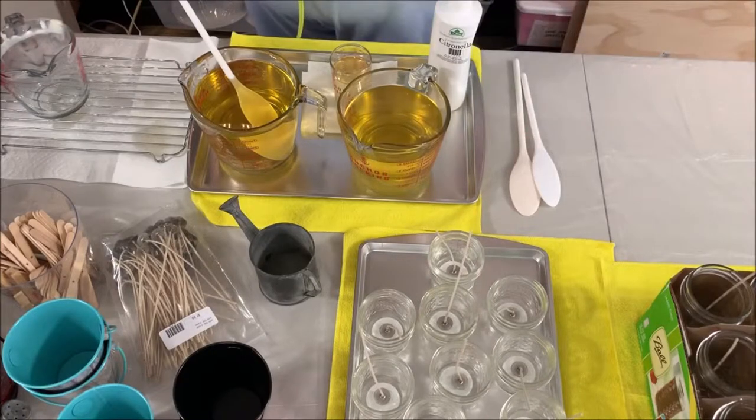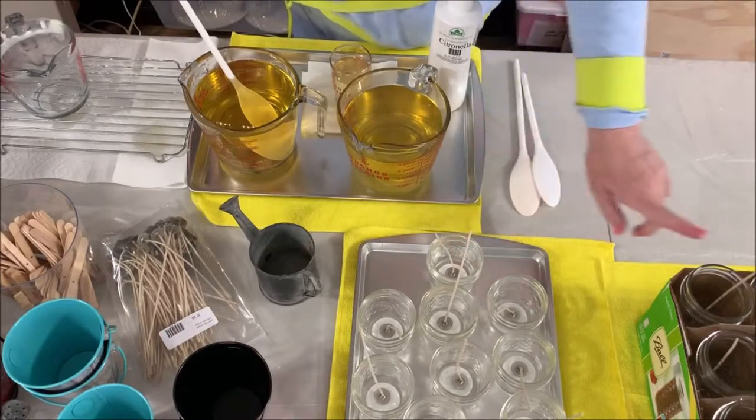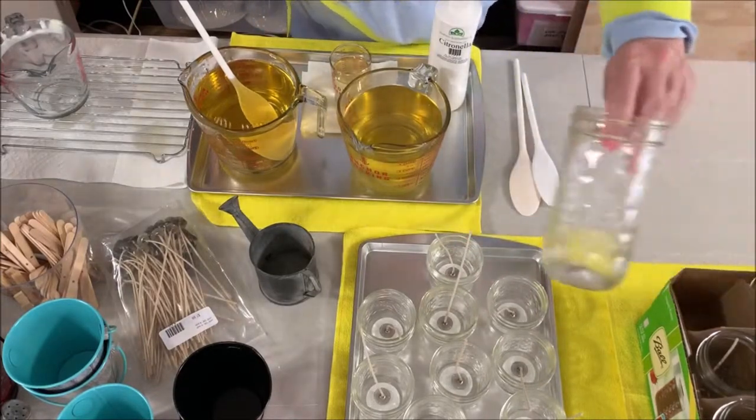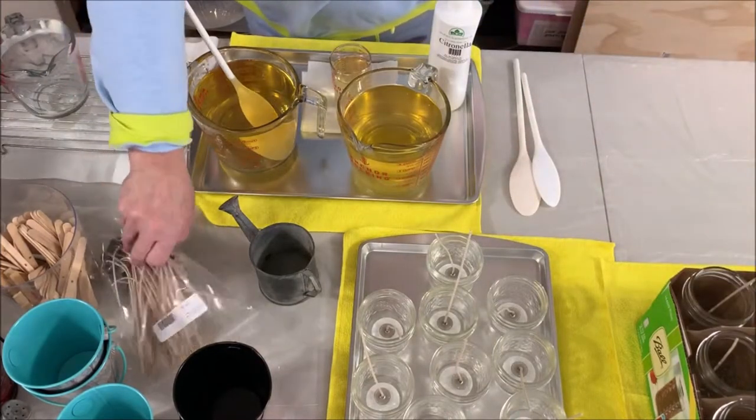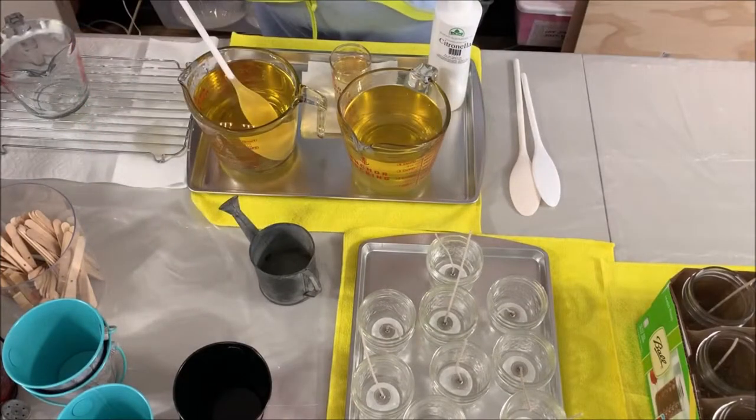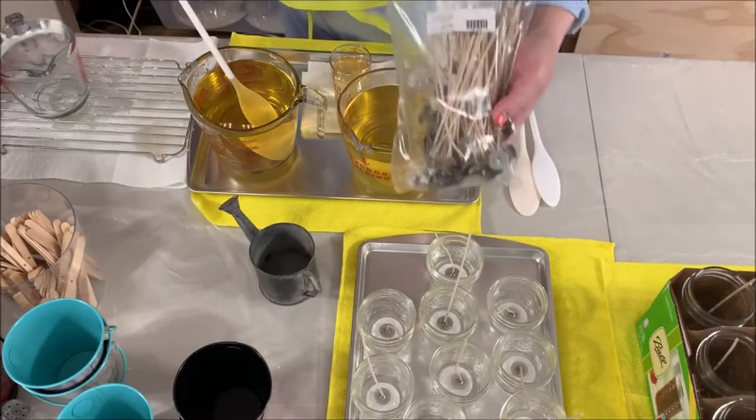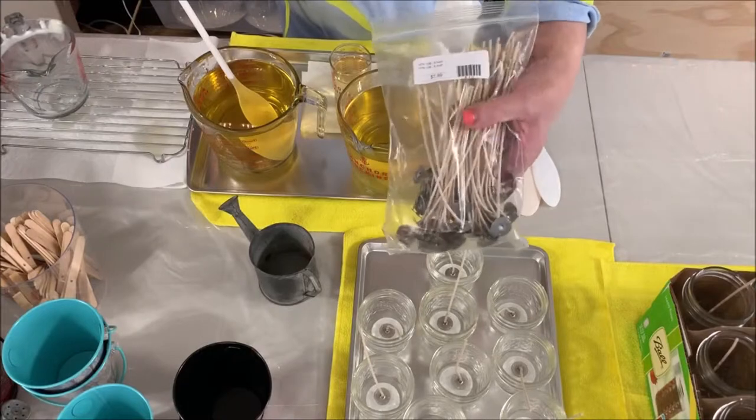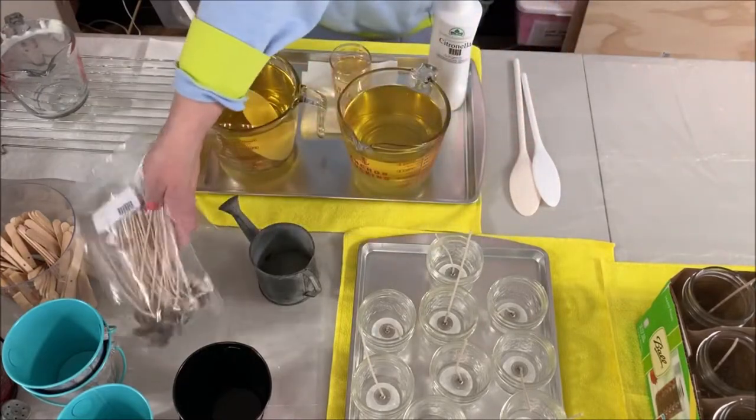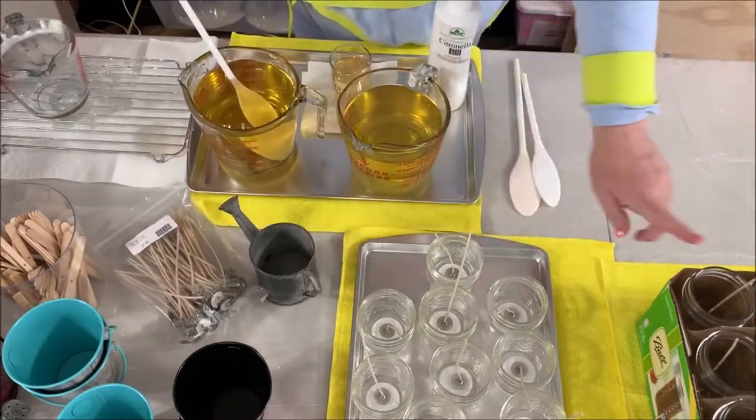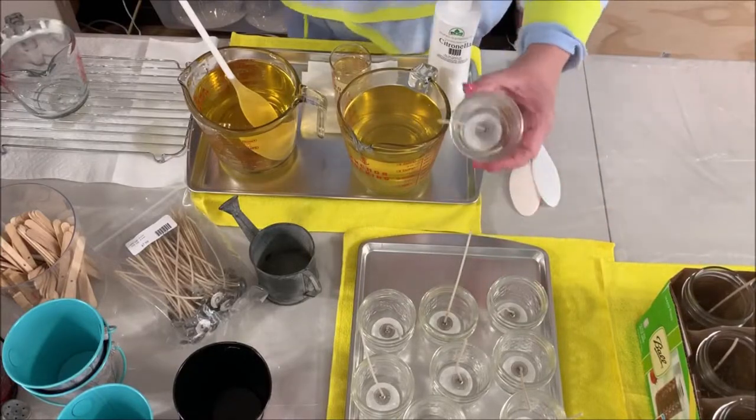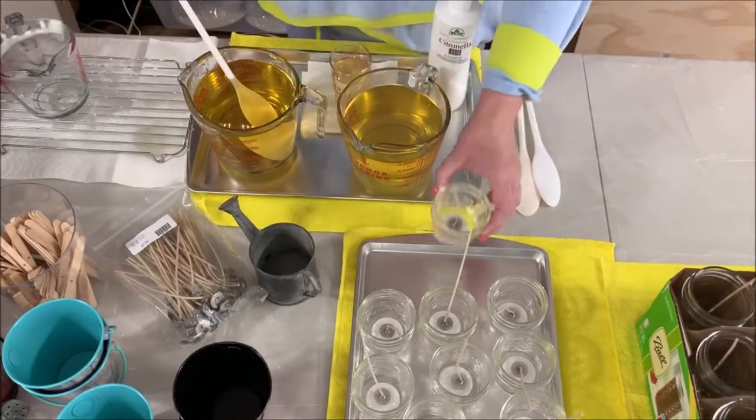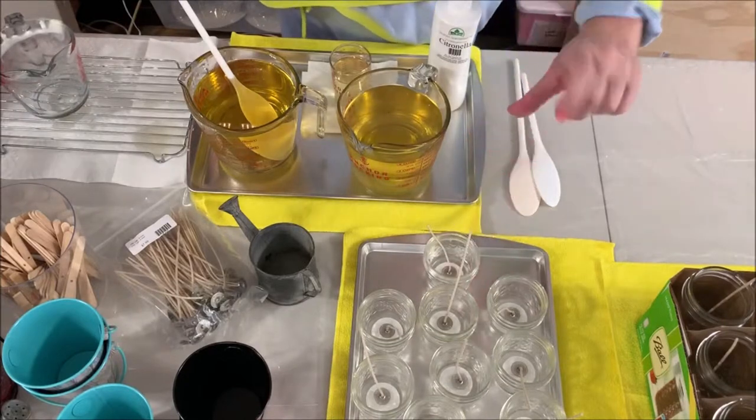What I'm using today are four ounce jelly jars. I'm also going to make some regular citronella candles in a 12 ounce jelly jar. I'm using HTP 125 wicks. The same wicks I'm using for the four ounce I'm also using for the 12 ounce, and the reason is wick size goes by the diameter of the container, not the height of the container.